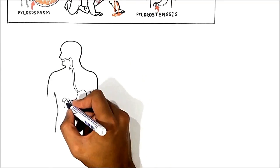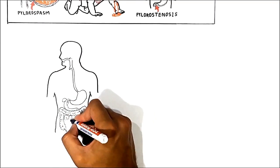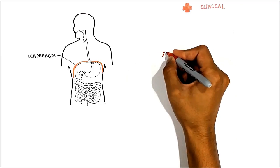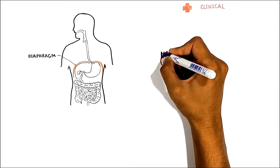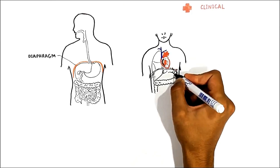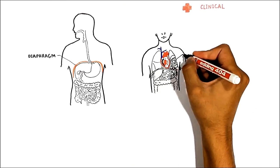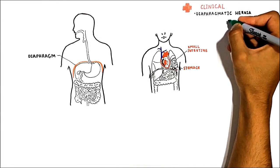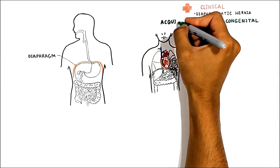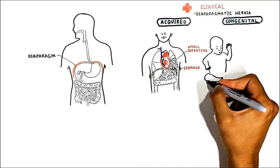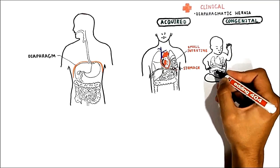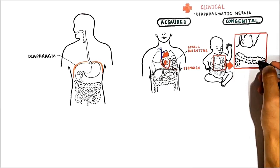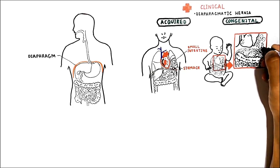Now let's continue and talk about the surrounding structures. The top of the stomach lies against the diaphragm. In clinical practice, sometimes in case of a defect in the diaphragm, abdominal organs — more commonly the stomach and small intestine — move upward into the chest. This is called diaphragmatic hernia. Diaphragmatic hernia can be congenital or acquired. In congenital cases, you have a defect in the embryological development of the diaphragm, resulting in a sufficient opening to allow gastrointestinal tract organs to pass through and into the thoracic cavity.